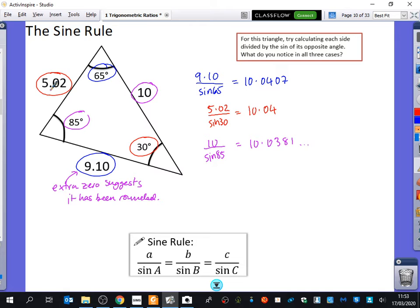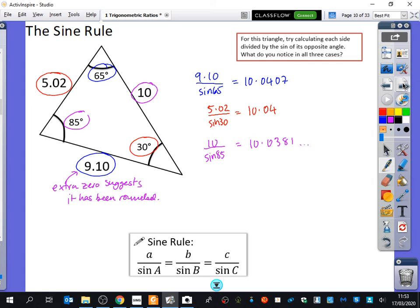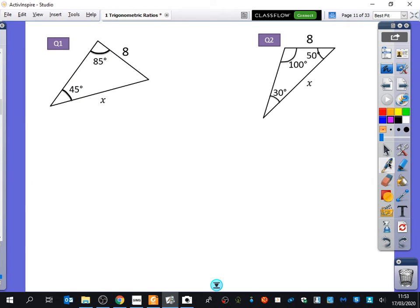And so, that's what the sine rule is, where you take one of the sides divided by the sine of its angle, another side divided by the sine of its opposite angle, and another side divided by the sine of its opposite angle. They're all equal to each other. But when you use the sine rule, you don't tend to use all three of these. You tend to just use two pairs. You only need two pairs to be able to do this kind of thing. So, I'm going to start off by having a look at a couple of examples that we've got here.